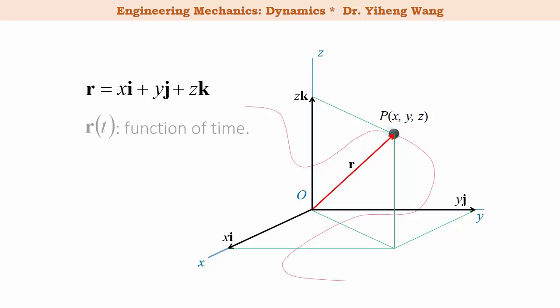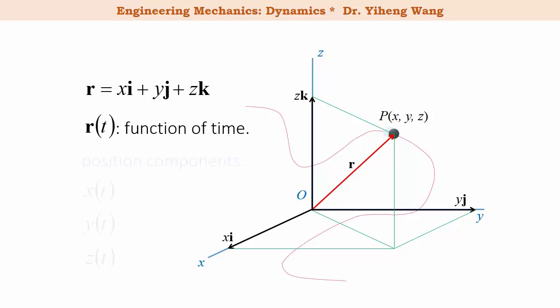The position is a function of time, and the x, y, and z components of the position vector r represent the positions along the x, y, and z directions respectively, and they are also functions of time.